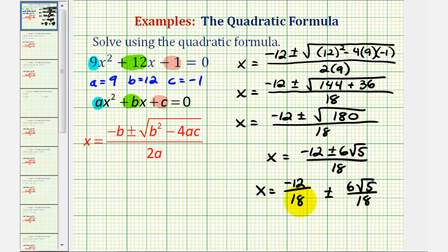Twelve and eighteen share a common factor of six. There are three sixes in eighteen, and two sixes in twelve. And for the second fraction, there are three sixes in eighteen, and one six in six. So this simplifies nicely to x equals negative two thirds, plus or minus square root of five over three.